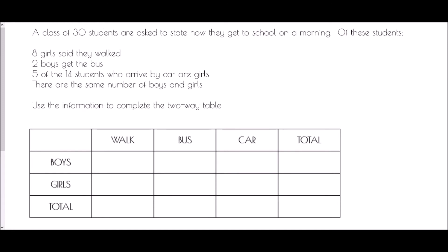Just to explain what a two-way table is and why we use them. You'll see one at the bottom of your screen. We've got a table which has different categories going across the top and different categories going down the side. These are all ways that a group of people have been categorized — separated out into boys and girls, and then each of those into people who walk, people who get the bus, and people who take a car.